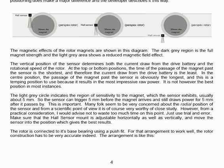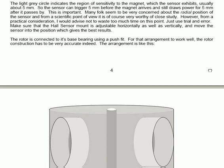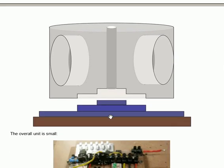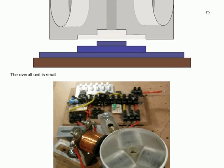Many folks seem to be very concerned about the radial position of the sensor and from a scientific point of view it is of course very worthy of close study. However, from a practical consideration, I would advise not to waste too much time on this point. Just use trial and error. Make sure that the Hall sensor mount is adjustable horizontally as well as vertically and move the sensor into the position which gives you the best results. The rotor is connected to its base by just being a push fit. For that arrangement to work well, the rotor construction has to be very accurate. The rotor just pushes down onto the bearing. Some bearings have a vertical bolt which can be used to additionally hold the rotor, but that is not essential and not all rotors have it.